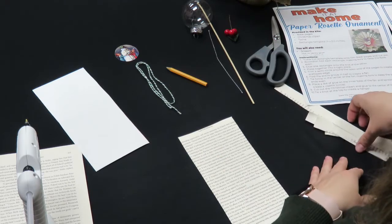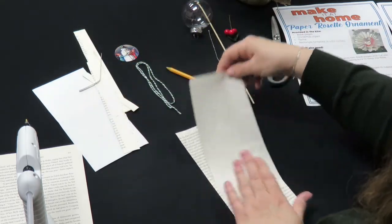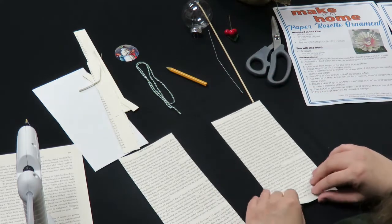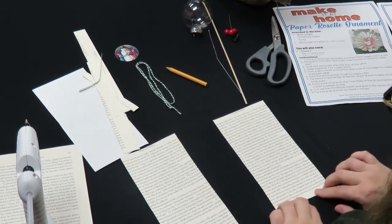Next you're going to accordion fold each of the cutout templates. Make the folds small and try to keep them as even as possible.